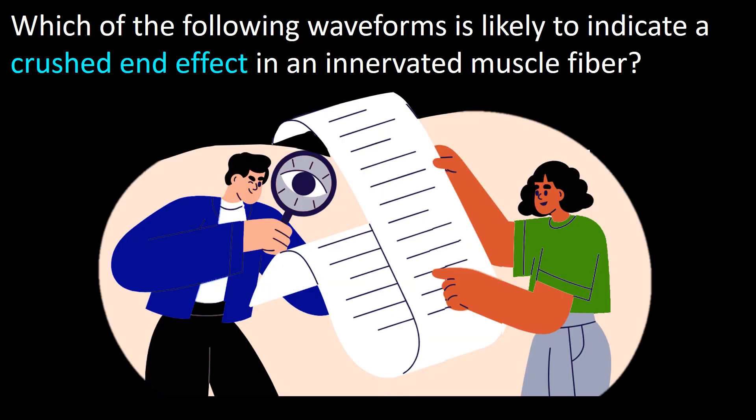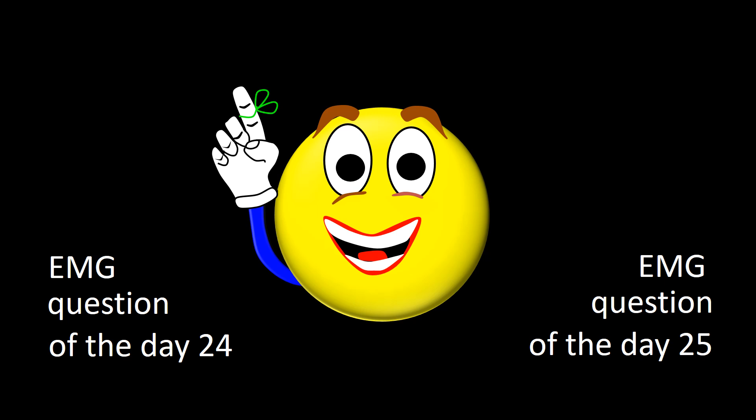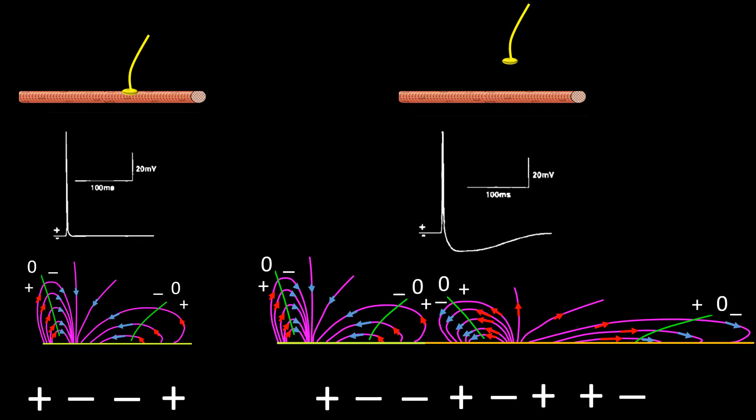Now that we know what the crush-end effect is, let us briefly review the electrical characteristic of innervated muscle fibers and contrast them with those of denervated muscle fibers. As you recall in EMG questions of the day 24 and 25,